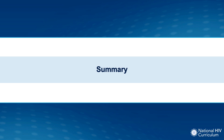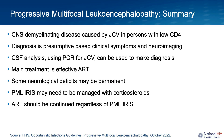In review: PML is a demyelinating disease of the central nervous system caused by the JC virus in individuals with HIV and advanced immunosuppression. Diagnosis is typically presumptive based on clinical symptoms and neuroimaging; CSF PCR for JC virus can confirm the diagnosis. The mainstay of treatment is effective antiretroviral therapy. Neurological deficits may be permanent. If PML-IRIS occurs, corticosteroids can manage severe symptoms from cerebral edema or mass effect, and ART should be continued regardless.